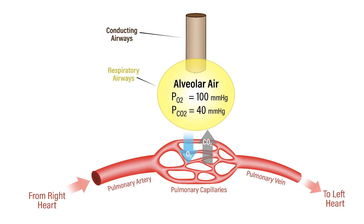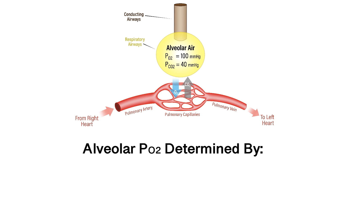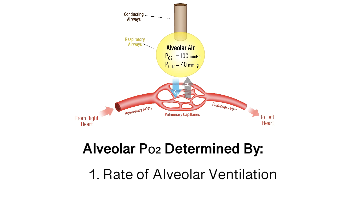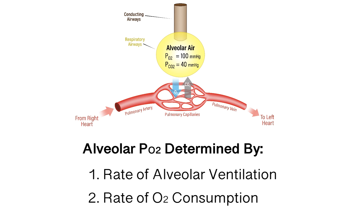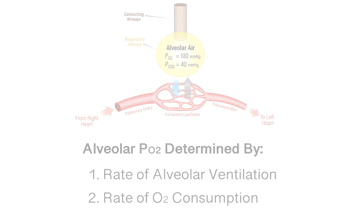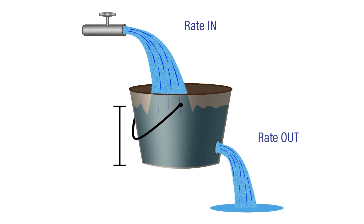The alveolar partial pressure of oxygen is determined by two main parameters: one, the rate of alveolar ventilation, and two, the rate of oxygen consumption in the body, which is determined by the metabolic rate. In order to visualize how alveolar ventilation and the rate of O2 consumption determine the alveolar partial pressure of oxygen, you could think of the lungs as behaving as a bucket with a hole in it.